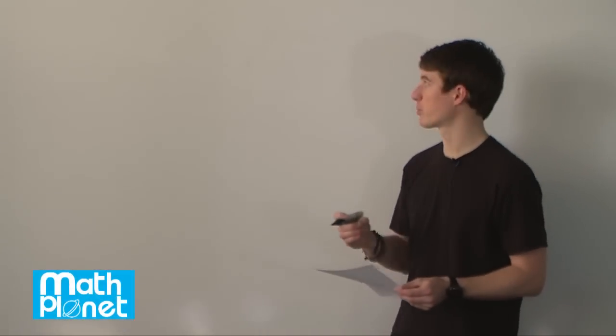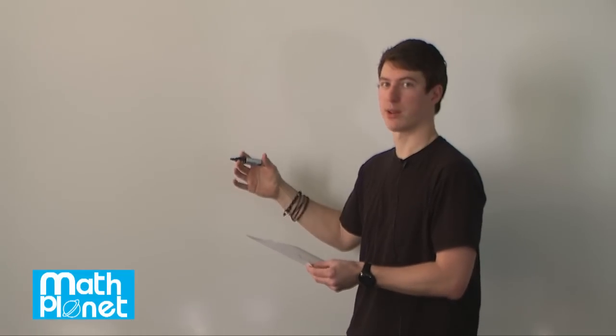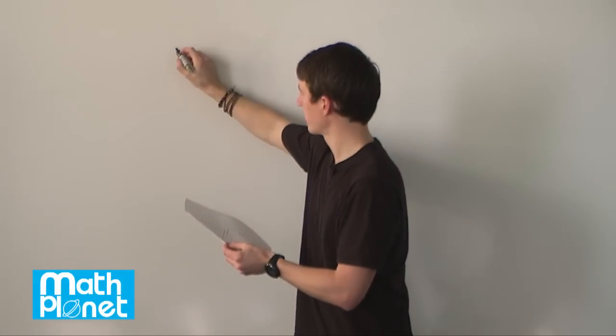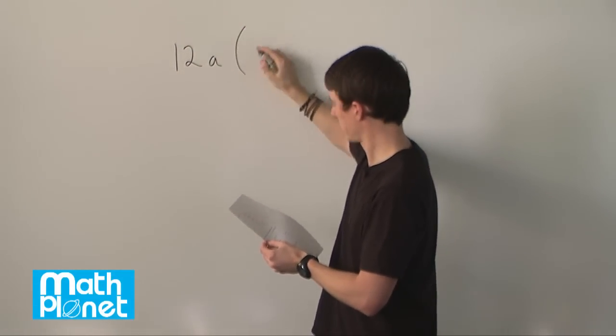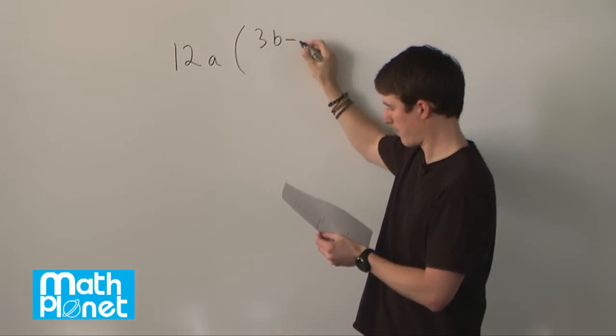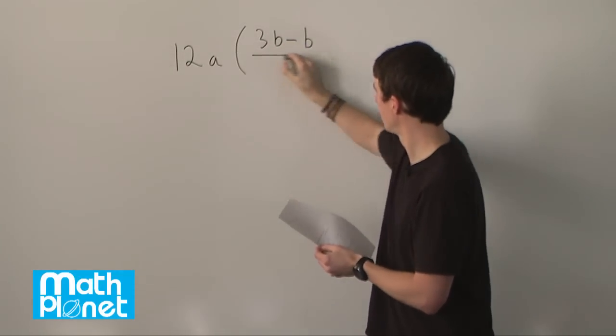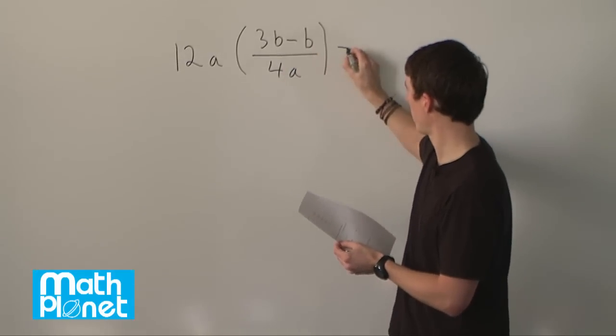For this problem we have a basic algebraic expression with a rational expression in it, so let's see what it is and then we're going to multiply out, expand and solve. What we have is 12a times this expression here, 3b minus b over 4a, and that's all equal to 36.